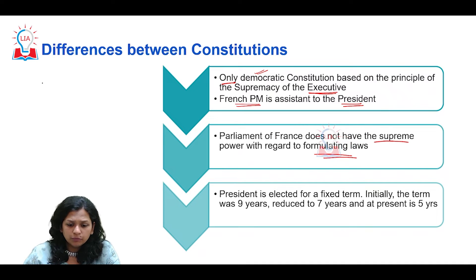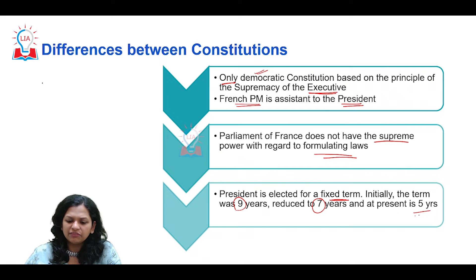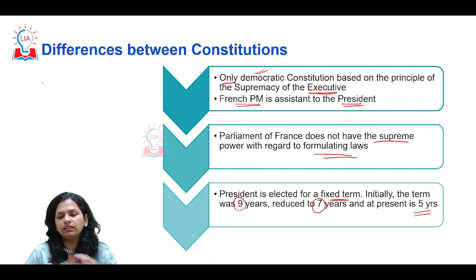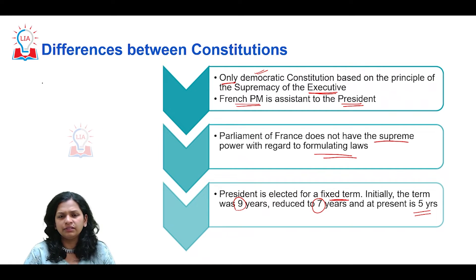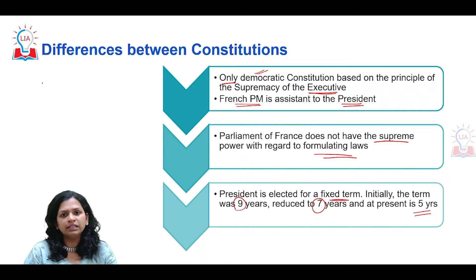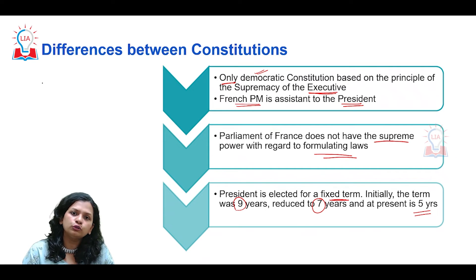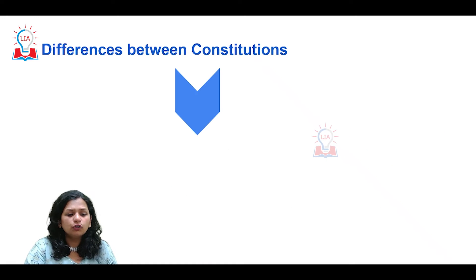Another point of difference is the term of the French president. Initially it was nine years, later reduced to seven years, and at present it is five years. This gradual reduction came through globalization and interaction with other governments. The initial term of nine years for one person in power reflects the extreme importance given to the executive and the supremacy of the president in France.